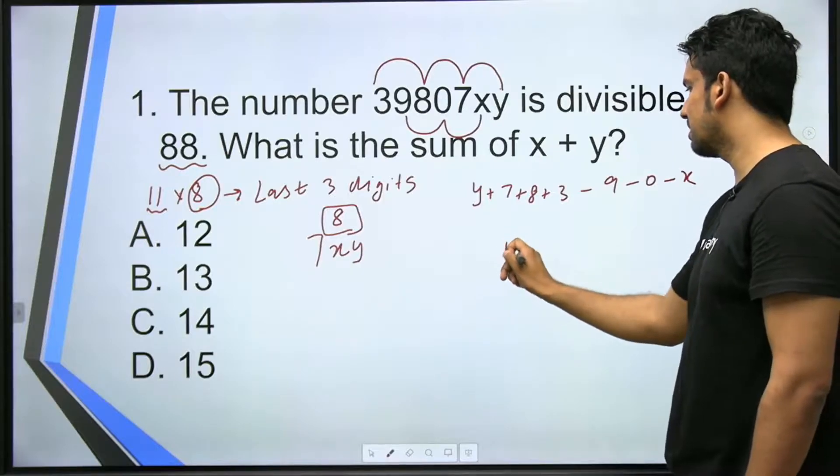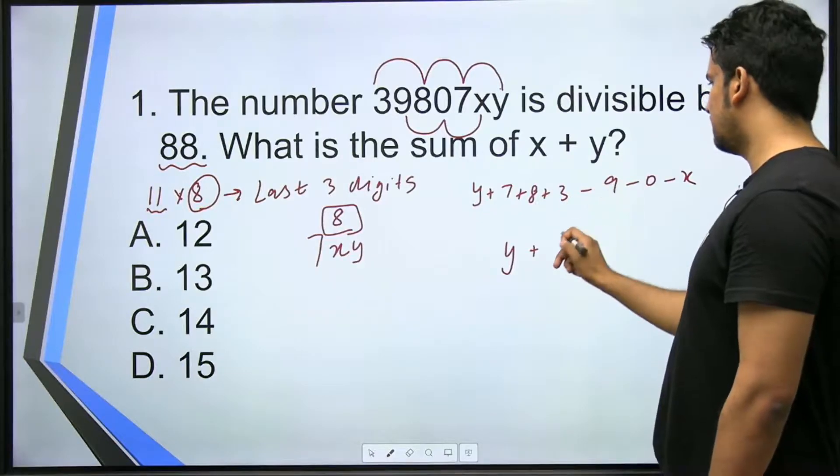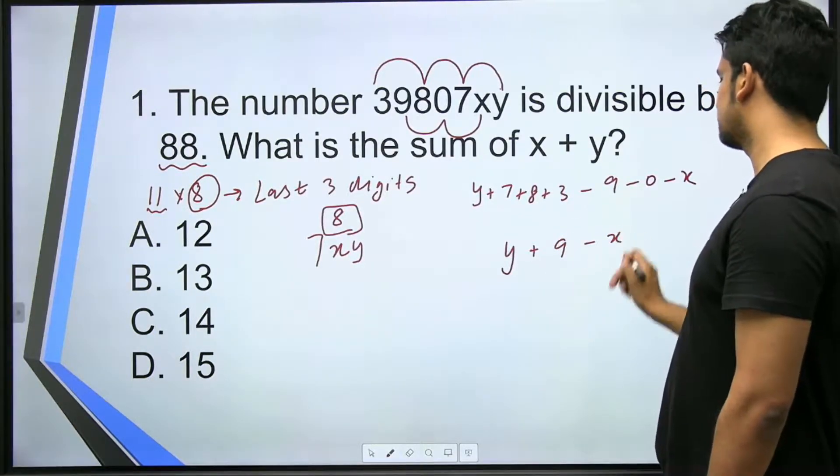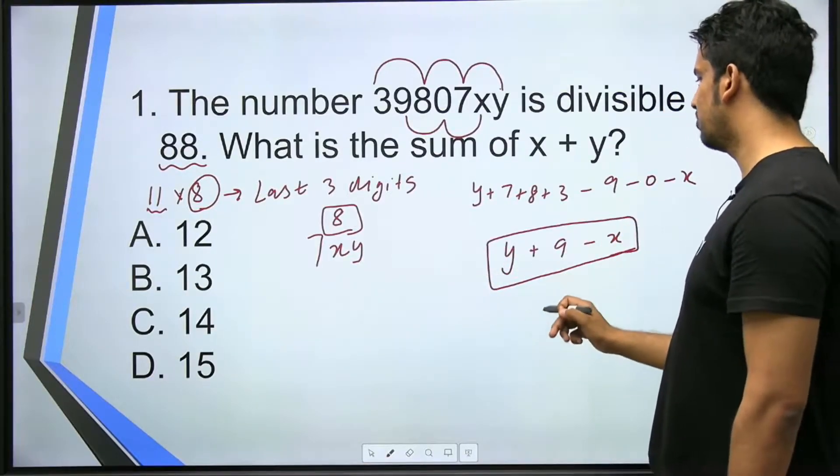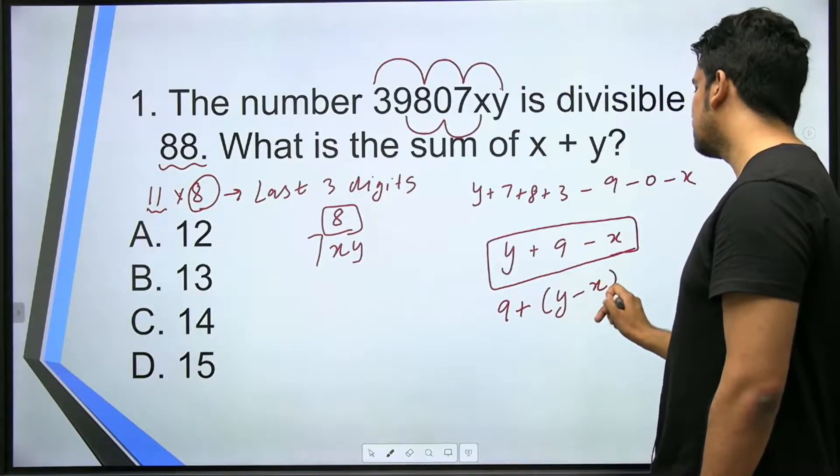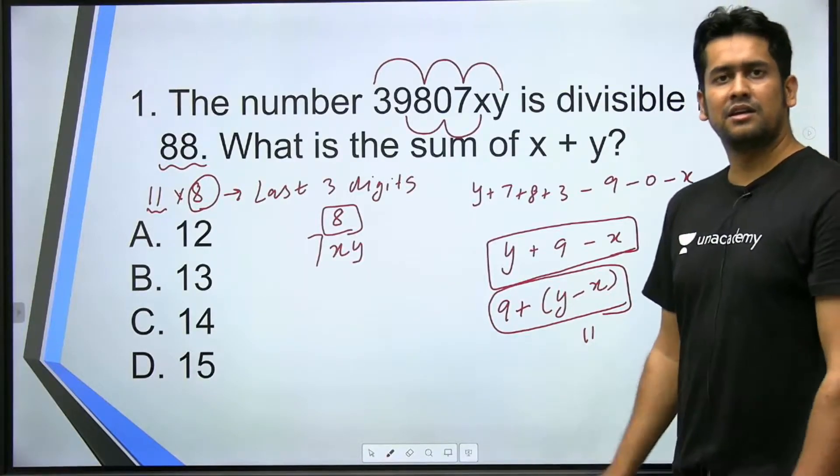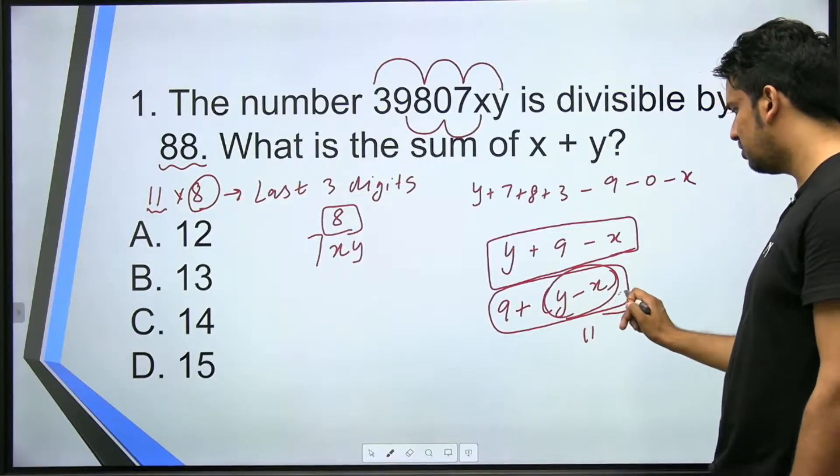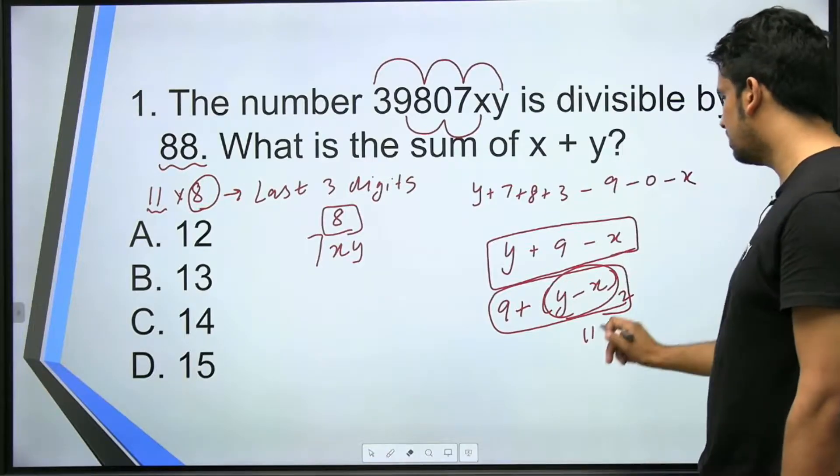So minus 9 minus 0 minus x. If I combine this, so it is y plus 8, 7, 15 plus 3, 18 minus 9 is 9 minus x. So this should be divisible by 11. Or we can write this as 9 plus y minus x should be divisible by 11. So this will be divisible by 11 only if this equals 2. So we'll try to make y minus x equal to 2.